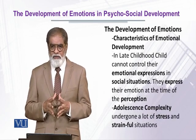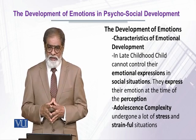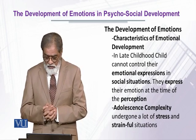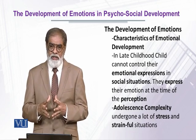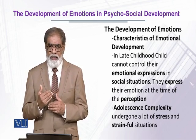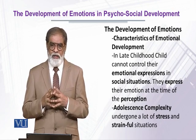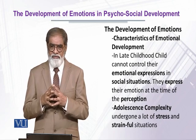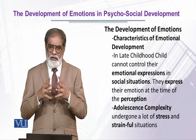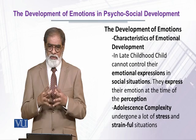Adolescence age میں اور late childhood میں emotional expressions — بچہ فوری عمل پذیر کرتا ہے اور social situations میں اسی وقت اس کی perceptions develop ہوتی ہیں اور اظہار کرتا ہے۔ اگر ہم چاہیں کہ وہ control کرے تو اسے directions دی جاتی ہیں۔ Childhood سے پہلے کے ادوار میں اسے comfortable کرتے ہیں، needs fulfill کرتے ہیں، کھیل اور مختلف activities میں شمولیت کے ذریعے، peers اور family members کے ساتھ interaction سے emotions stable ہوتے ہیں۔